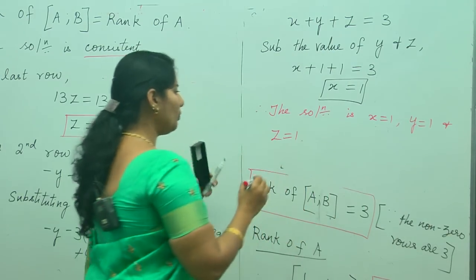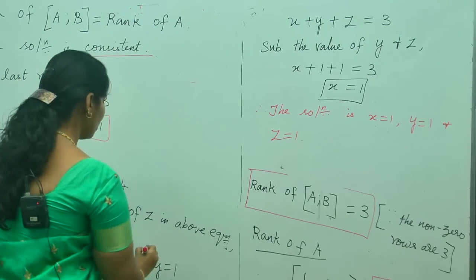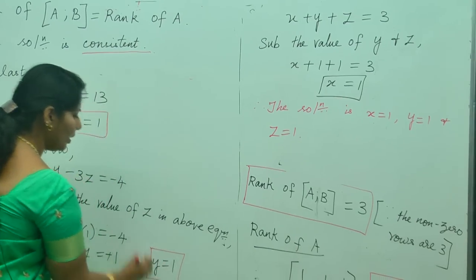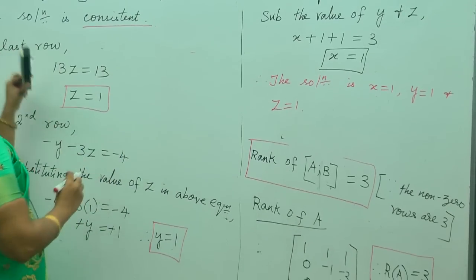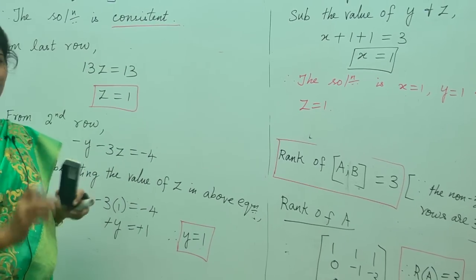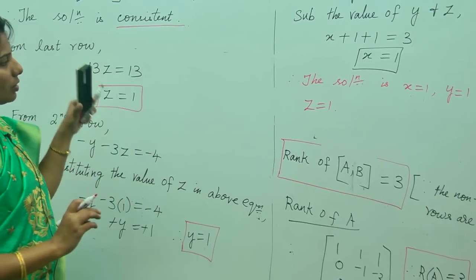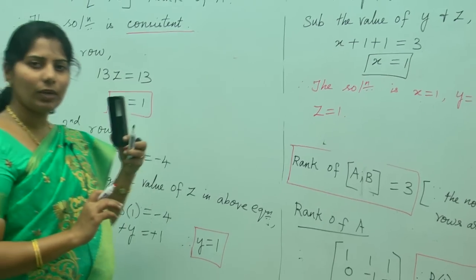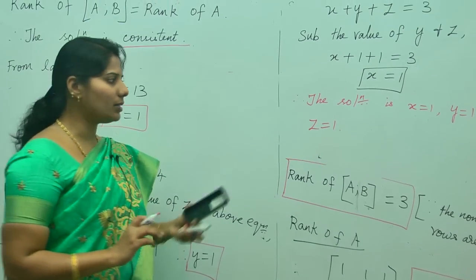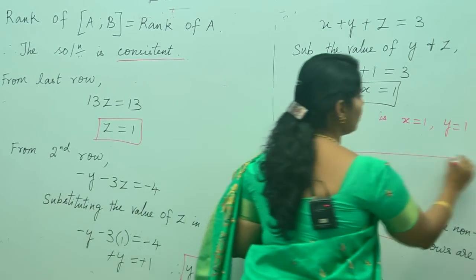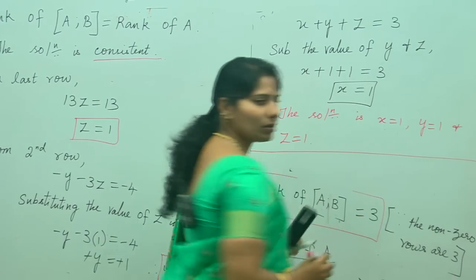Therefore the solution is x equals 1, y equals 1, and z equals 1. These solutions are obtained only when the system of equations is consistent. When it is inconsistent, you will not get even a single solution.